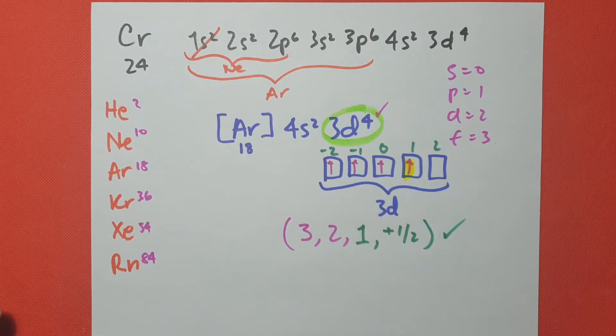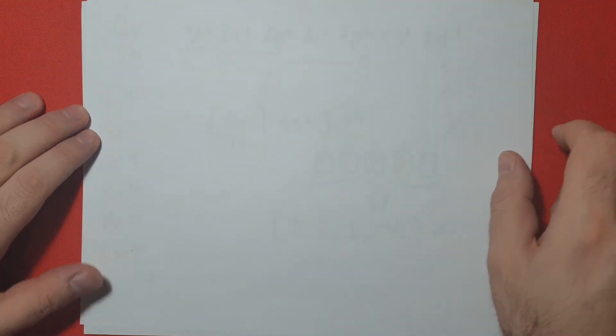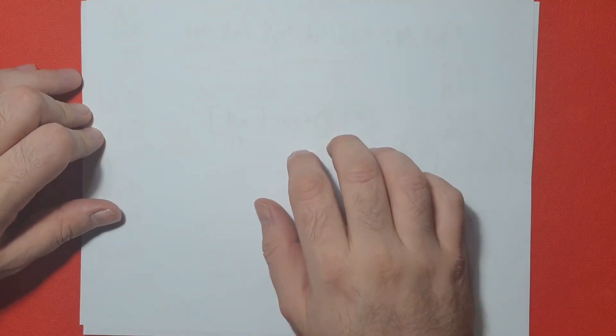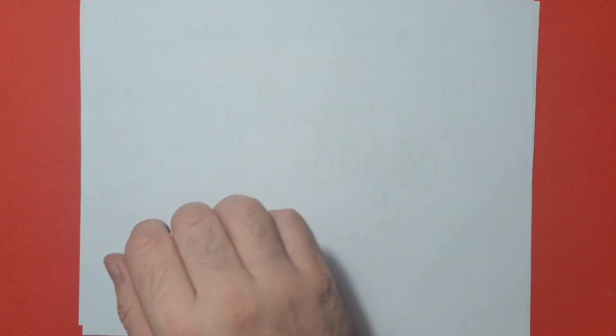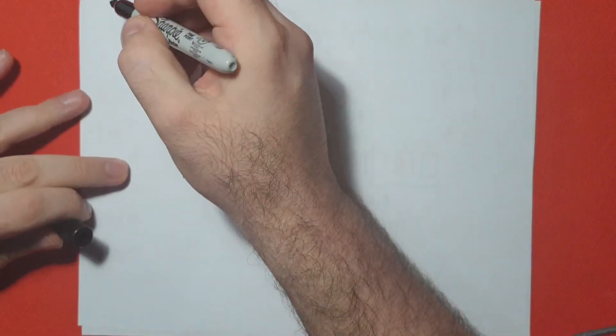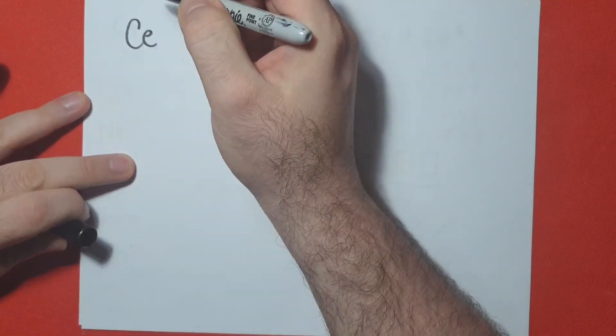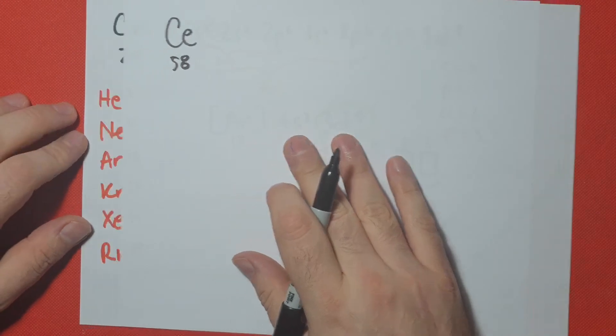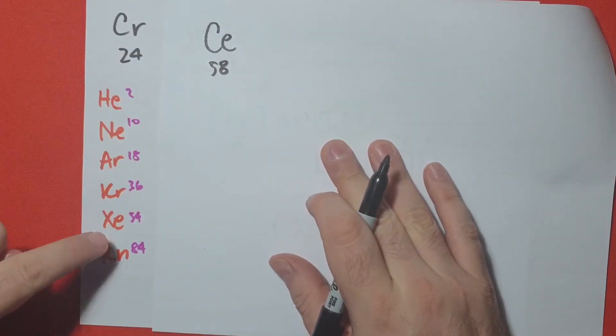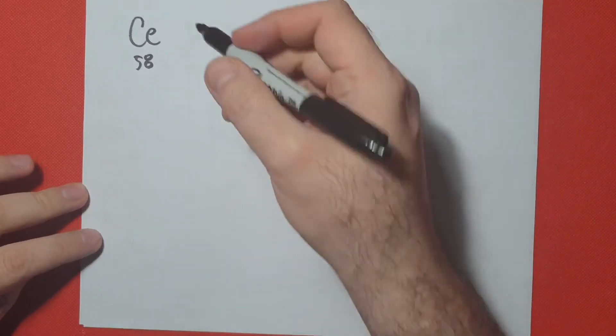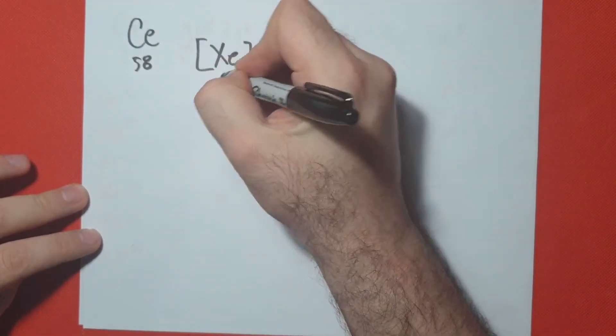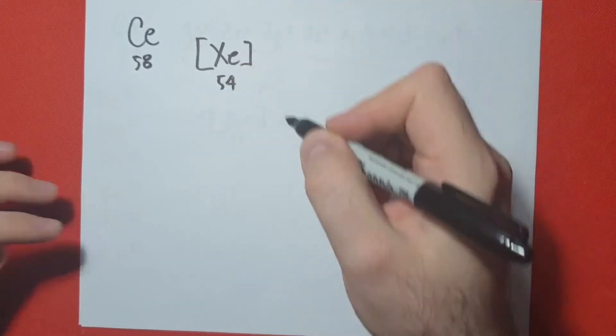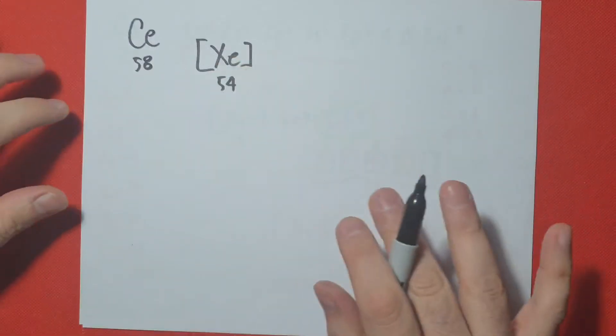Let's do an f orbital. And for the f orbital, let's choose cerium. And cerium is atomic number 58. So 58, let's use our cheat sheet right here. 58, we're going to use xenon. So we're going to abbreviate using noble gas notation. Xenon is 54. And I'm still missing 4 electrons, because this is in its neutral form.